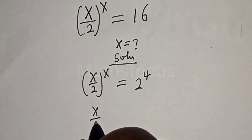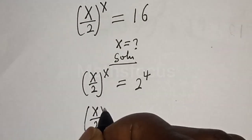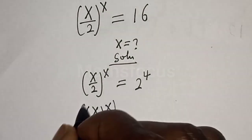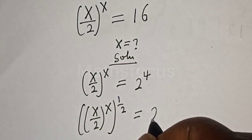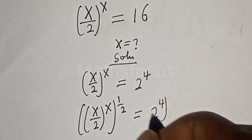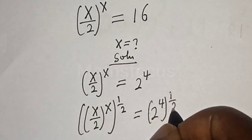S divided by 2 to the power of S, to the power of 1 over 2, is equal to 2 to the power of 4 to the power of 1 over 2.